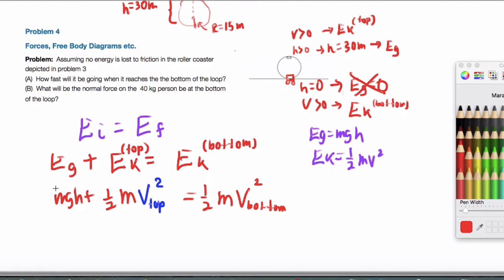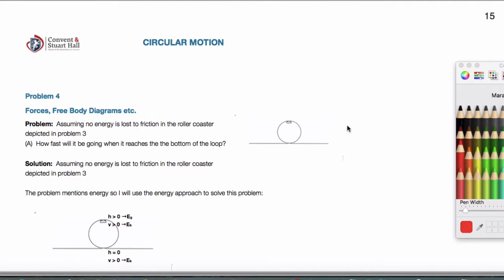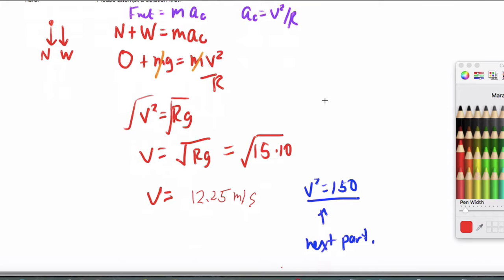Okay. Now the m's actually all cancel. I can divide those out. So I'm going to get 10 times 30 plus one-half. And v at the top is going to be this number that I actually obtained right here.